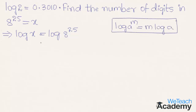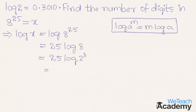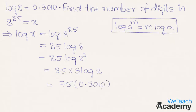Using this exponent of power rule, we can write this as 25 log 8. Since 8 is 2 cubed, we get 25 log 2 raised to the power 3, and again using the exponent rule, 25 into 3 log 2 — that is 75 into the value of log 2, which is 0.3010. We get the final result as 22.5750, which is approximately equal to 23.